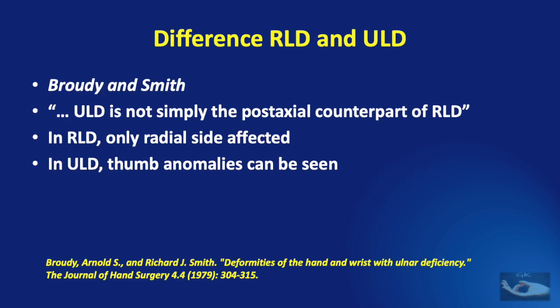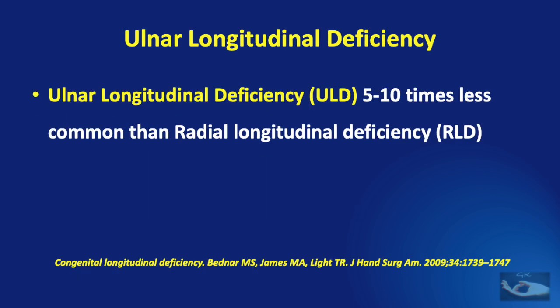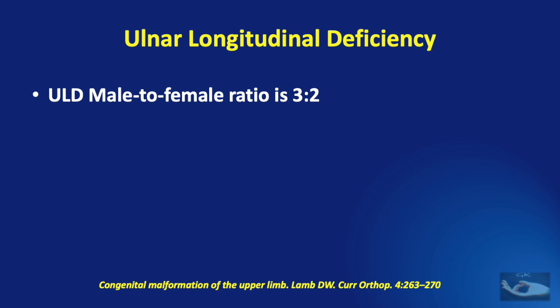Browdy and Smith, way back in 1979, observed that the Ulnar longitudinal deficiency is not simply the post-axial counterpart of the radial longitudinal deficiency. In radial longitudinal deficiency, only the radial side is affected, whereas in Ulnar longitudinal deficiency, not only is the Ulnar side affected, but even thumb anomalies are seen. Ulnar longitudinal deficiency is 5 to 10 times less common than radial longitudinal deficiency, and the male to female ratio is 3 to 2.